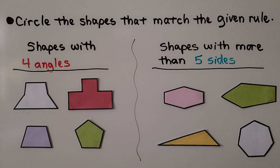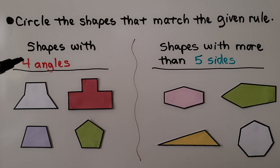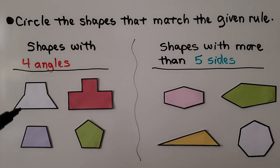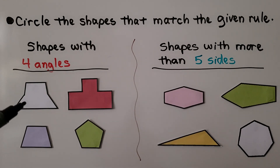We need to circle the shapes that match the given rule. The rule is shapes with four angles. If a shape has four angles and it's a two-dimensional shape, then it has four sides. This one does not have four sides — it has one, two, three, four, five, six sides — so it can't have four angles; it has to have six angles.